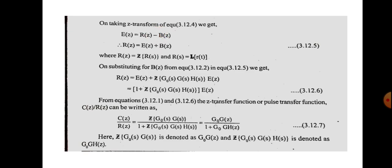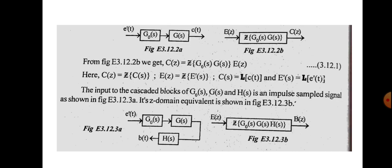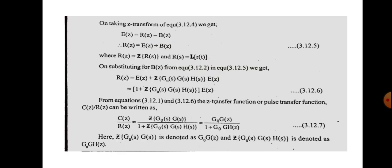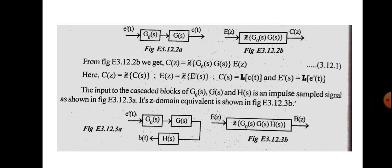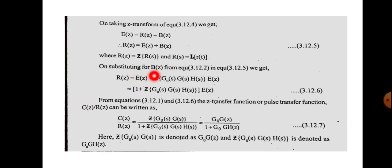We want to find C(z)/R(z). We have C(z) in terms of E(z). Now we need R(z). Rearranging the equation E(z) = R(z) - B(z), we get R(z) = E(z) + B(z). Substituting the expression for B(z): R(z) = E(z) + Z{G0(s)·G(s)·H(s)} · E(z). Factoring out E(z): R(z) = E(z) · [1 + Z{G0(s)·G(s)·H(s)}].